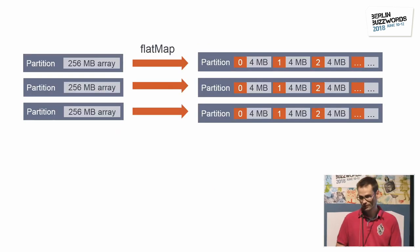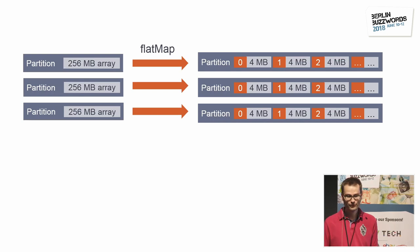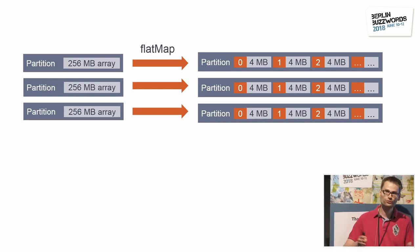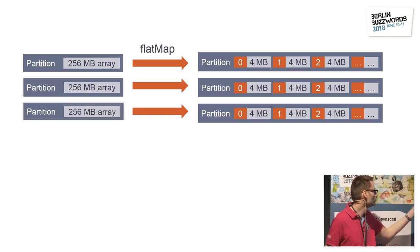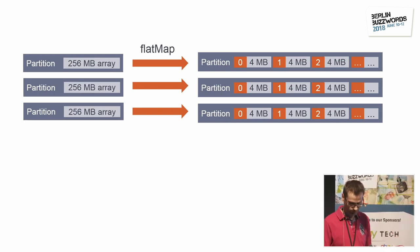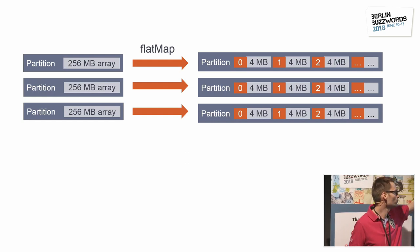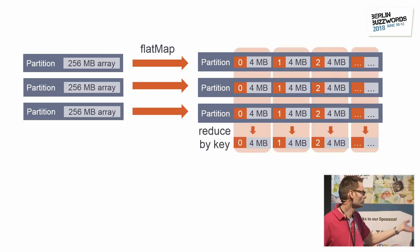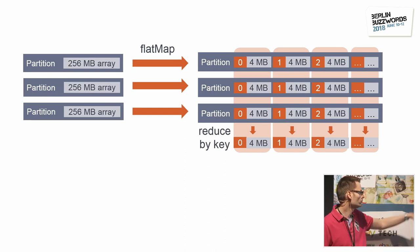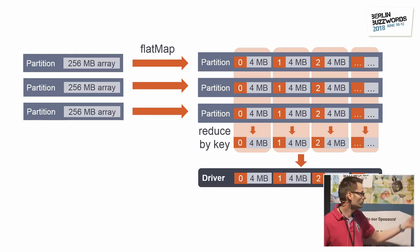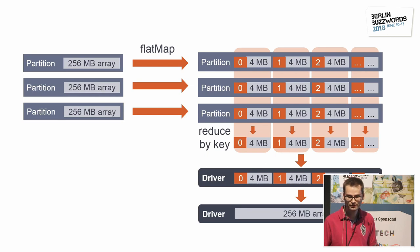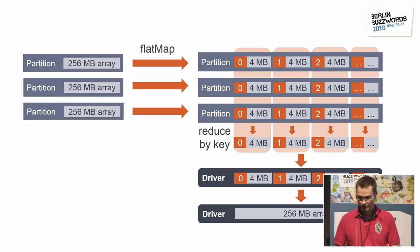Instead of reducing the full 256-megabyte array at once, we split it into 4-megabyte chunks. Using flat map we assign a key to each 4-megabyte chunk, then do reduce by key. This handles shuffling and accumulation per chunk inside the cluster. Then we do collect, bring everything back to the driver — just 256 megabytes total — and reassemble the array. This worked much better and we released it to production.